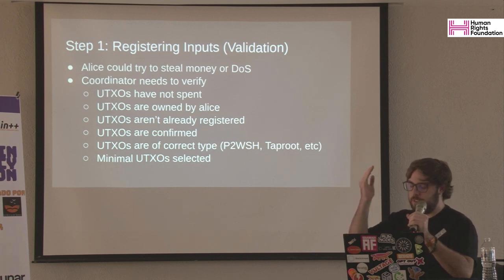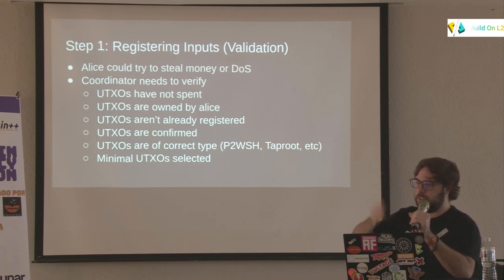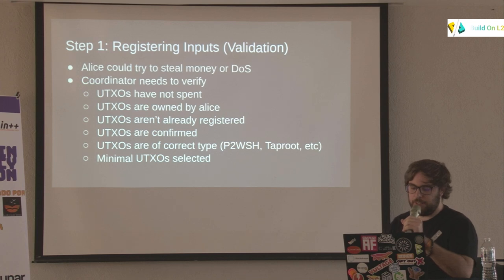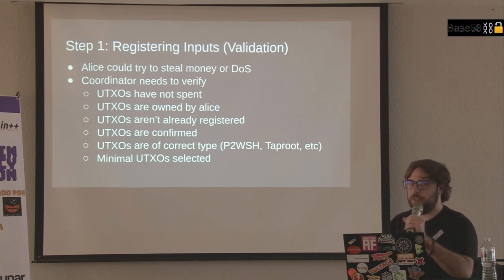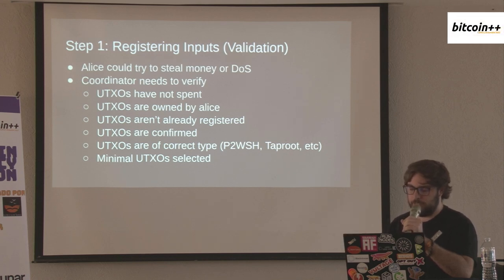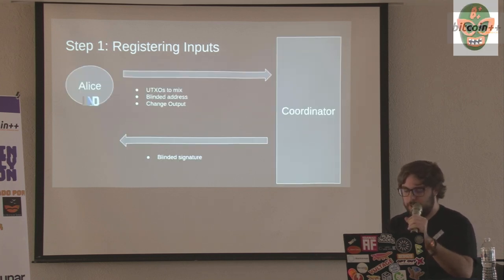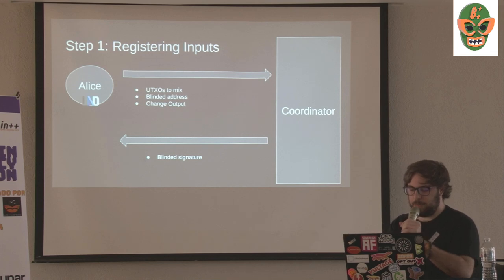We don't want all the inputs of these transactions to be different types. If they're all taproot it makes it much cleaner and harder to track who's doing what. We also want the minimal amount of UTXOs selected — we don't want Alice to just dump all her UTXOs and get a free consolidation, because that hurts the overall protocol. If they validate all that, the coordinator gives her a blinded signature.